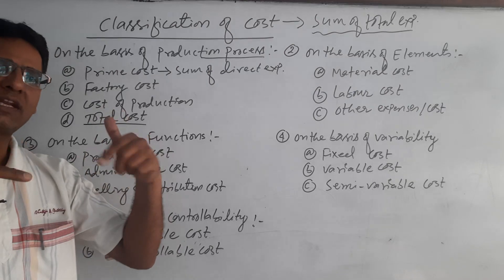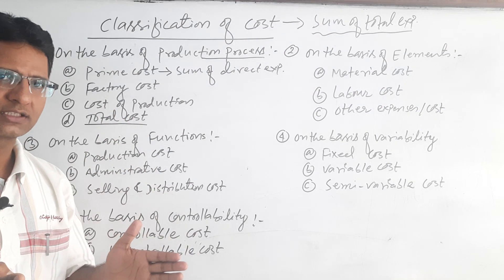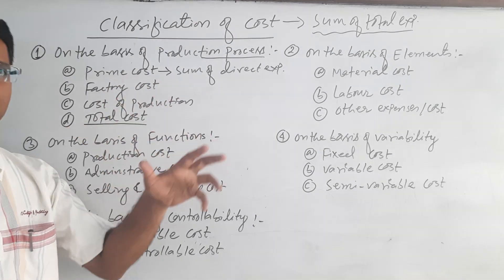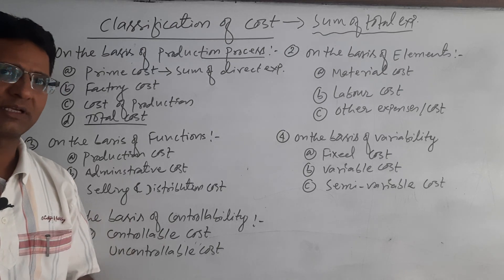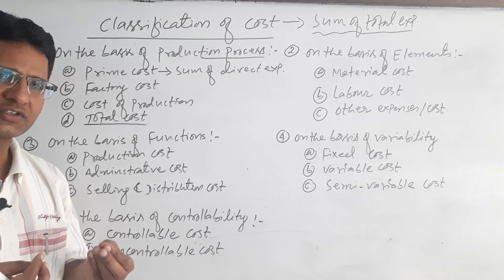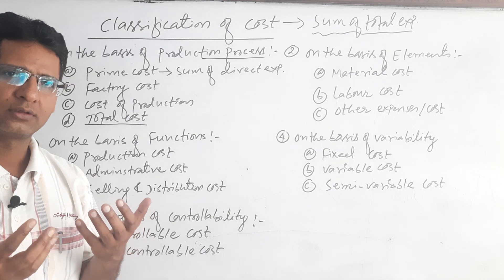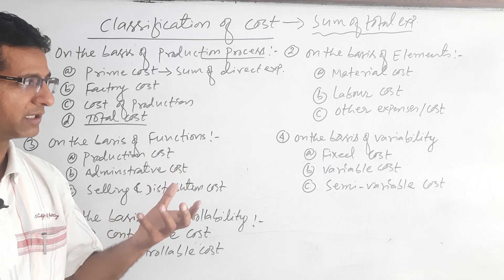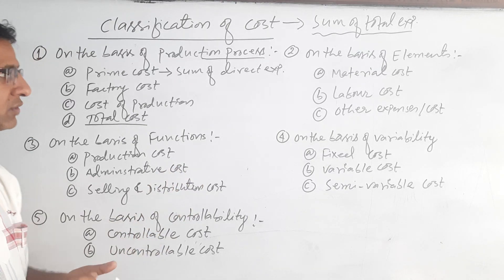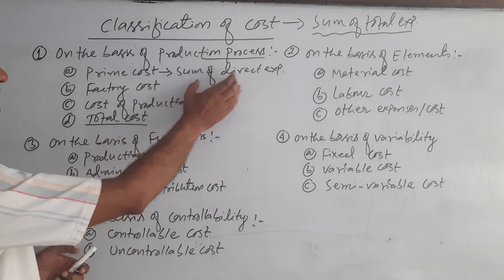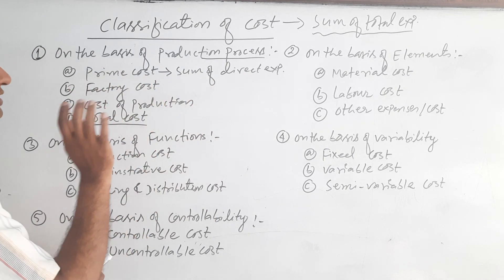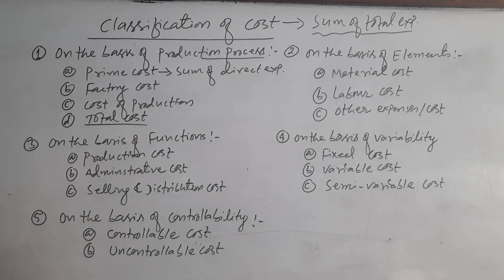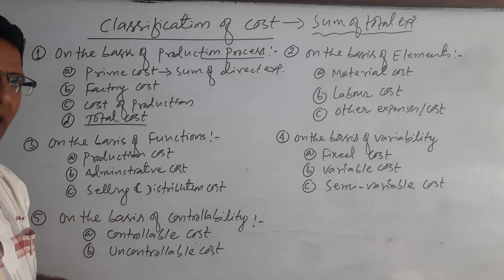The highest expenditure of any product or services is known as prime cost, because the huge expenditure we have to spend on raw materials. The second largest expense is on labour, and the third largest expenditure is other expenses. So the sum of different direct expenses — direct material, direct labour, and direct other expenses — is known as prime cost.